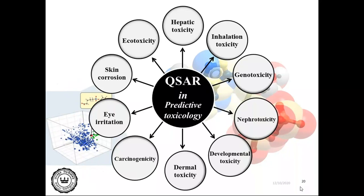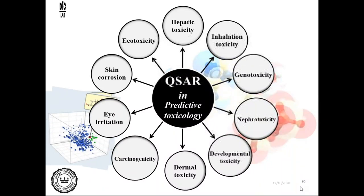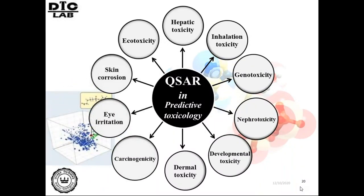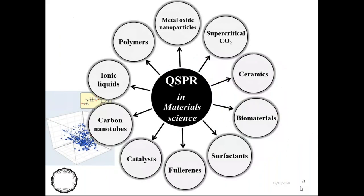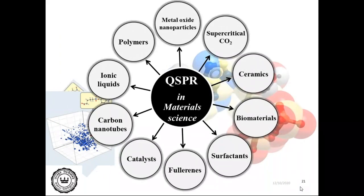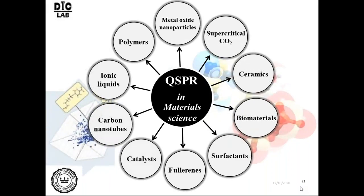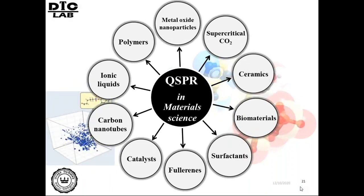In predictive toxicology there are several endpoints: inhalational toxicity, genotoxicity, nephrotoxicity, developmental toxicity, internal toxicity, carcinogenicity, eye irritation, skin toxicity, etc. For material science we may use different kinds of materials — ceramics, biomaterials, fullerenes, carbon nanotubes — for developing models for their different endpoints and properties.